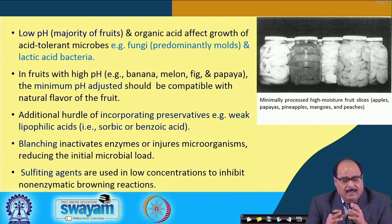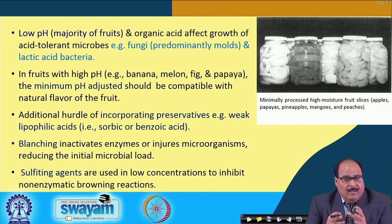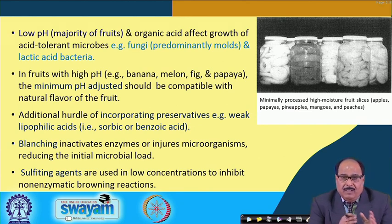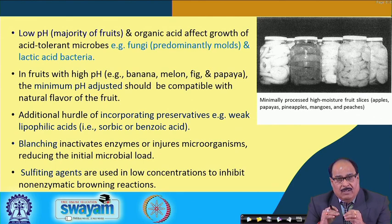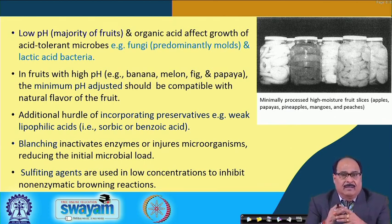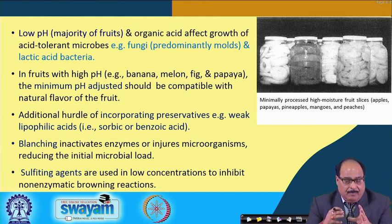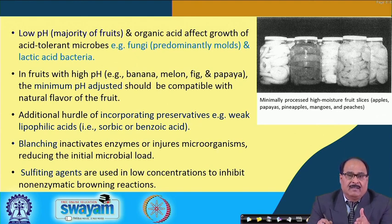Low pH using organic acid affects the growth of acid-tolerant microbes like fungi and lactic acid bacteria. In fruits which have high natural pH like banana, melons, and figs, the minimum pH adjusted should be compatible with the natural flavor of the fruit. The adjustment of pH to get the desired effect should not result in significant sensory or other changes. So a little reduction in pH, and the remaining stabilization can be done by addition of other preservatives. Blanching inactivates enzymes or injures microorganisms and reduces initial microbial load. Even sulphiting agents can be used to minimize browning reactions like non-enzymatic and other types of browning.